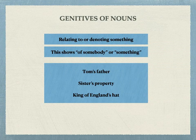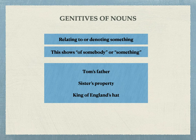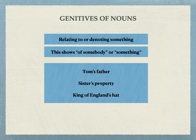Then comes genitives of nouns. Genitive means relating to or denoting something — it shows possession of somebody or something. For example, Tom's father, sister's property, King of England's hat. Here Tom, sister, and England are all nouns. To show that something is related to something else, we make use of genitives, and this is done in English with the usage of an apostrophe.